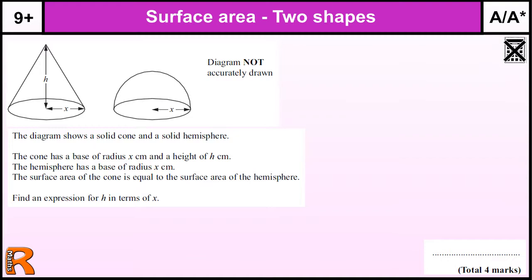Now, at the moment we're allowed to use formulas. This exam paper you were given these two formulas at the start, so you can use them to solve this question. We've got a diagram that shows a cone and a solid hemisphere. The cone has a base, well it's just telling you what's on the diagram. Find an expression where the surface area of the cone is equal to the surface area of the hemisphere. Find an expression of H in terms of X.